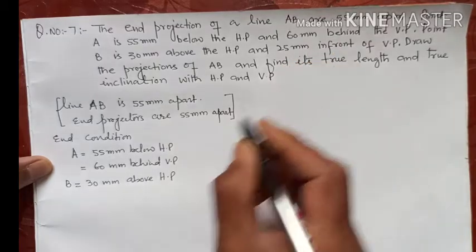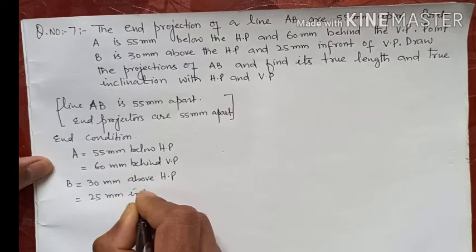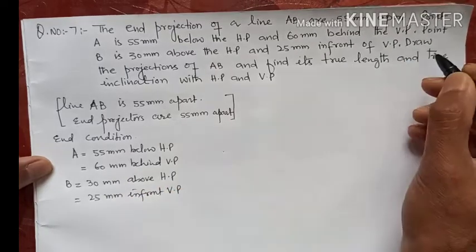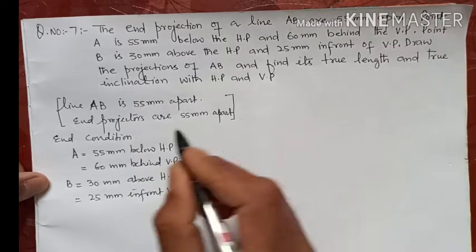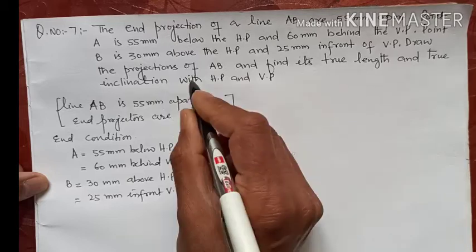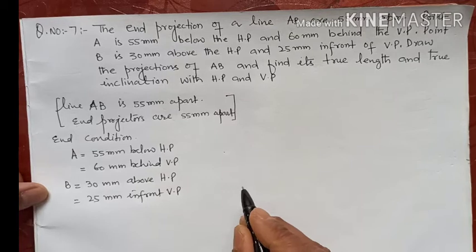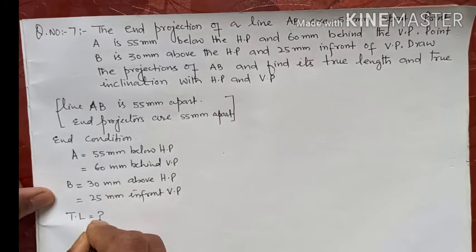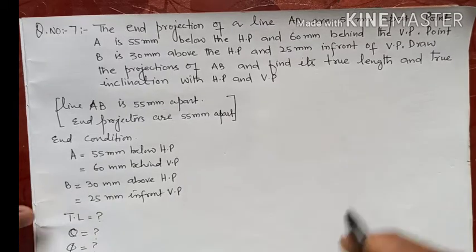Point B is also 25 mm in front of VP. So we have to find the projections of the line, its true length, and the inclinations theta and phi with HP and VP respectively. These are the things we need to determine.